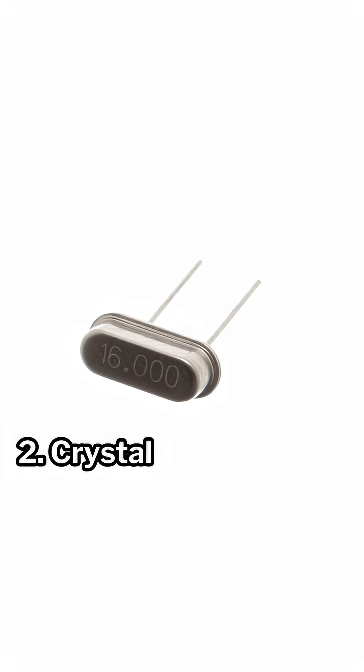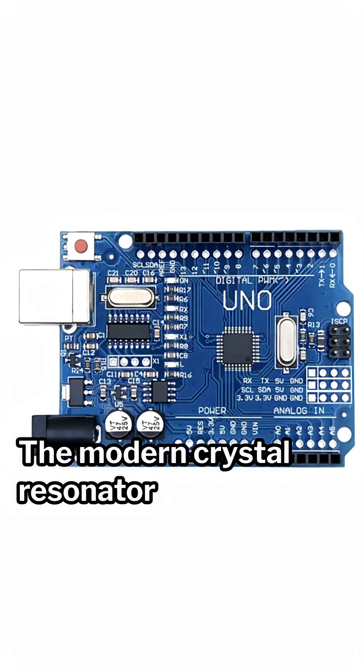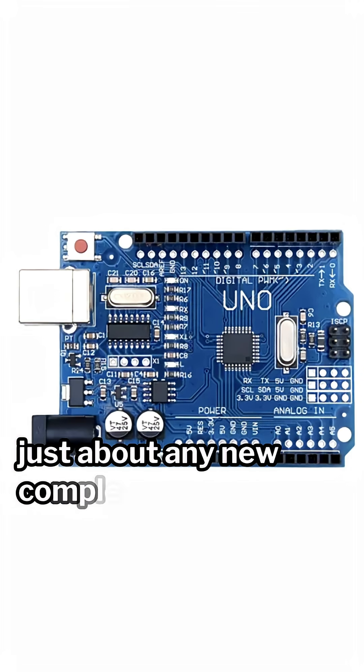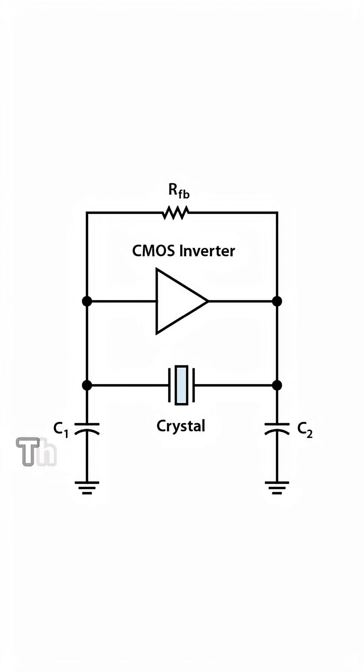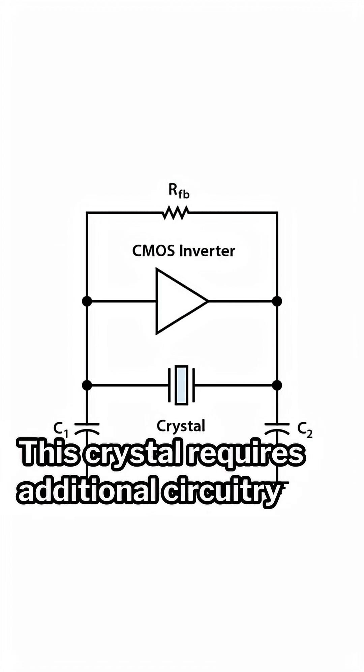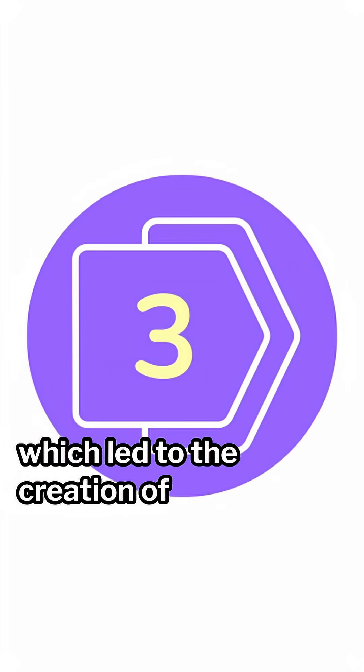2. Crystal resonator, crystal oscillator. The modern crystal resonator can be found in just about any new complex circuit board that is created. This crystal requires additional circuitry to become an oscillator, which led to the creation of the 3.